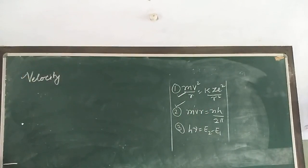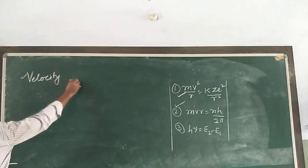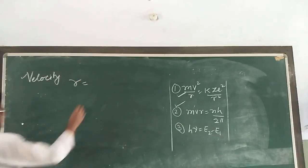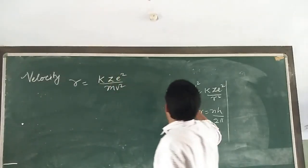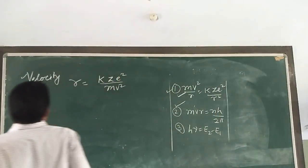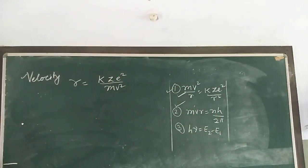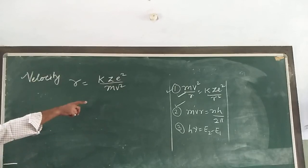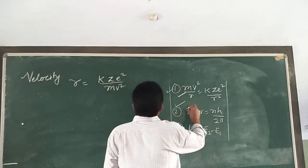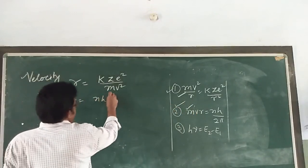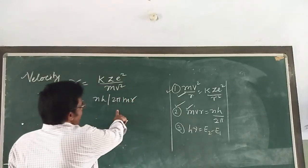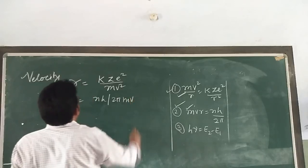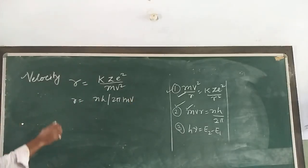With the help of our equation 1, r = kze²/(mv²). Putting this value of r into the angular momentum equation mvr = nh/2π, and solving, v comes out to be v = nh/(2πmr).